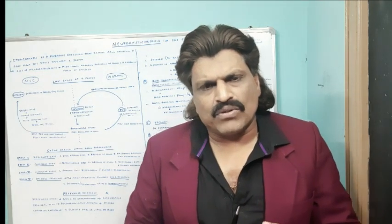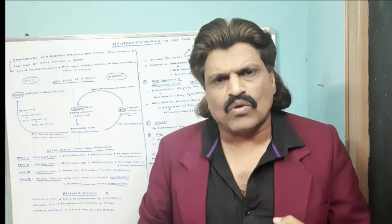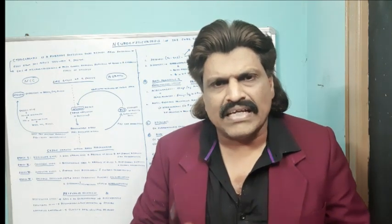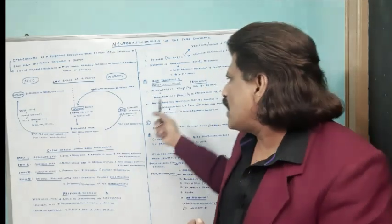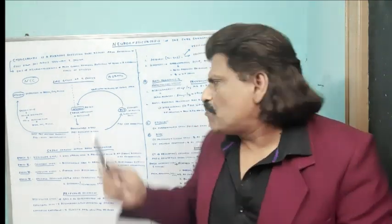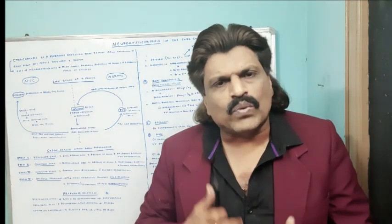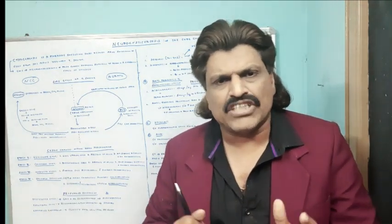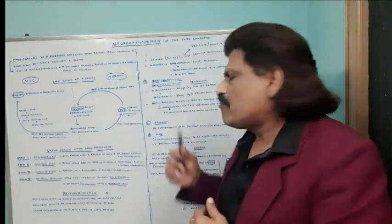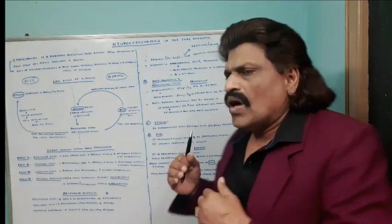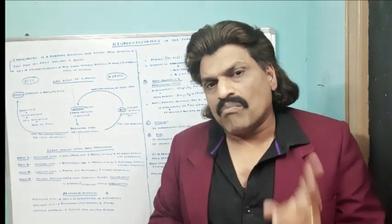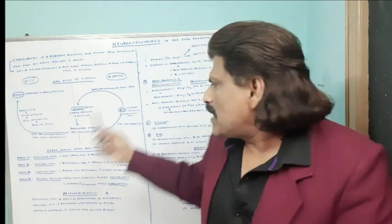The three main forms of treatment for neurocysticercosis are: anti-parasitic treatment (albendazole or praziquantel), steroids, and anti-epileptic drugs. Anti-parasitic drugs are given for parenchymal lesions. Albendazole dose is 15 mg/kg body weight per day for 8 to 28 days (generally 21 days). Praziquantel is given at 50 mg/kg in three divided doses for 15 to 30 days. The combination of both drugs is preferred when there are more than a few lesions; otherwise, albendazole alone is sufficient.